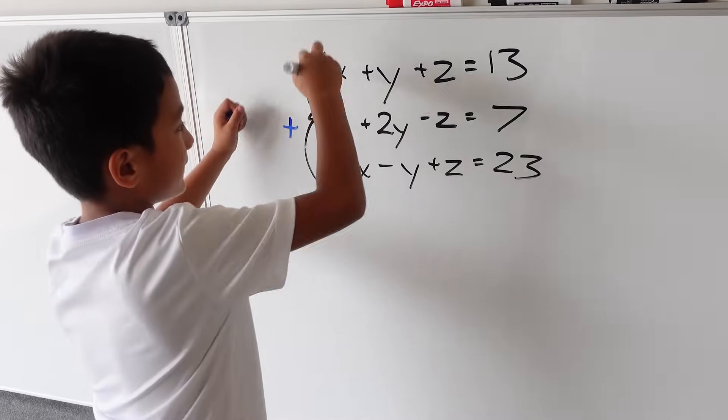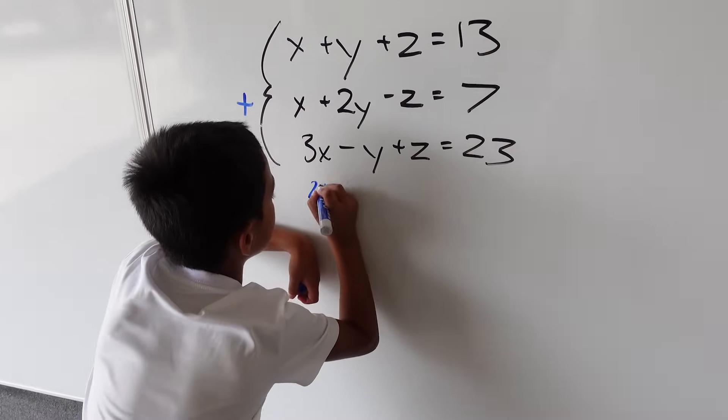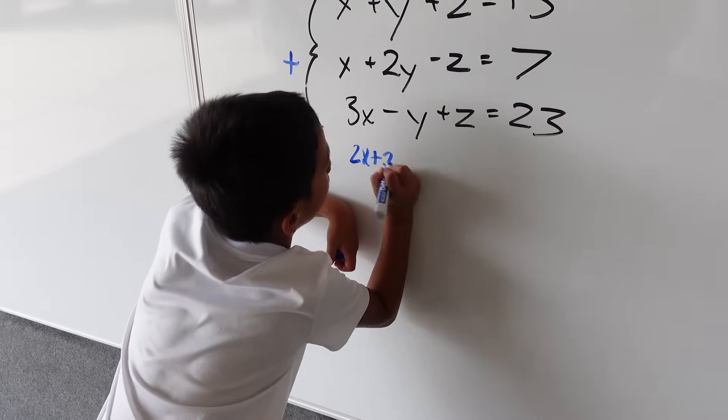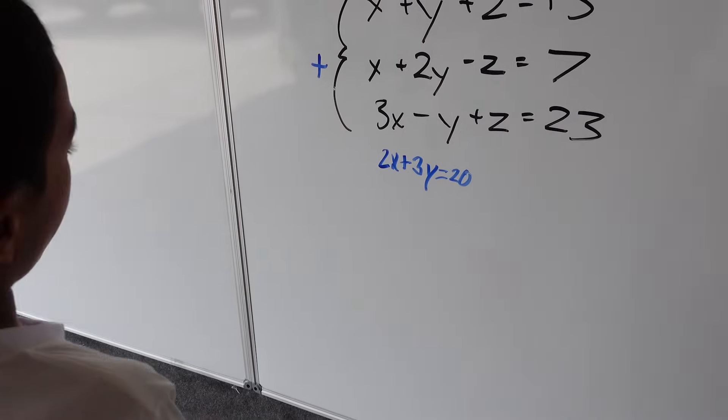You need to add these equations together because you want all the z's to get crossed out. So you have 2x plus 3y then equals 20, because you crossed out the z's, so you don't need to worry about those now.